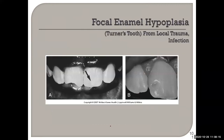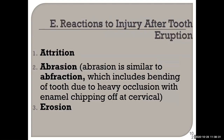Enamel hypoplasia, Turner's tooth from localized trauma — this little pit — focal enamel hypoplasia. Then attrition is tooth-to-tooth wear, abrasion is when something is rubbing against the tooth, and erosion is chemical.